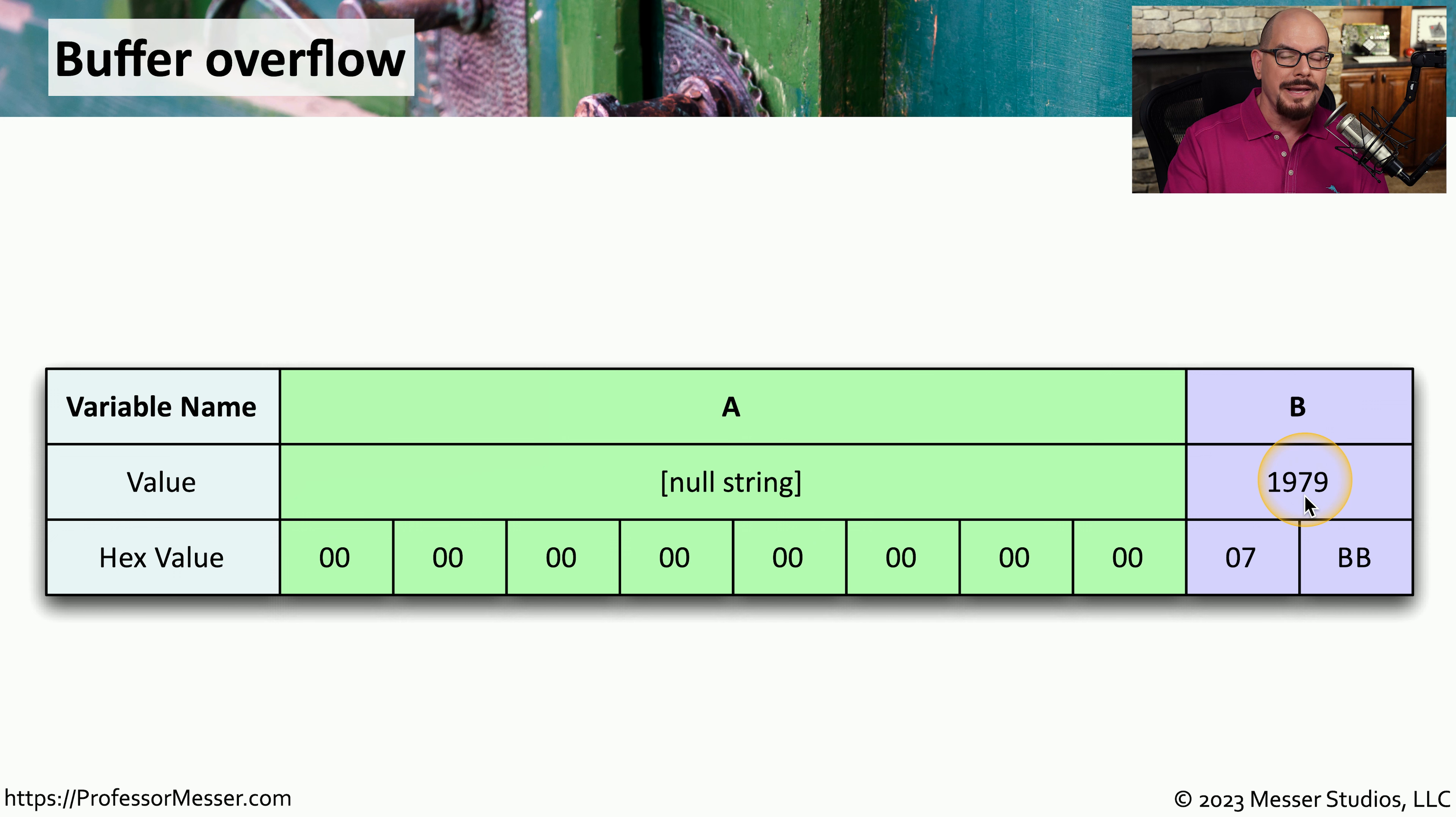Normally, variable B is not something that could be changed from inside the application. But this attacker has found a vulnerability with variable A that allows us to perform a buffer overflow.